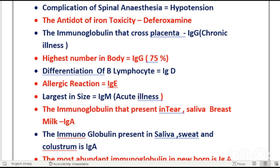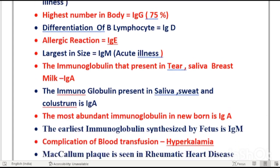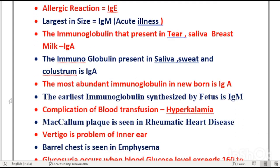A detailed immunoglobulin video will be available on this channel soon. IgA is present in tears, saliva, breast milk, and colostrum. The first breast milk is called colostrum. The most abundant immunoglobulin in the newborn is IgG. The earliest immunoglobulin synthesized by the fetus is IgM.